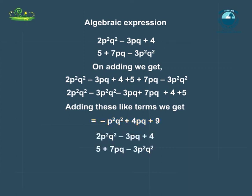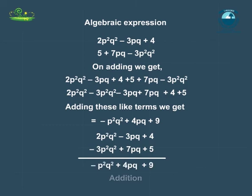We can also use the row method to solve this problem. We write each expression to be added in a separate row. While doing so, we write like terms one below the other and then add them.